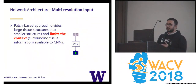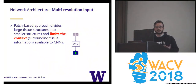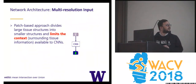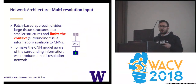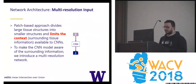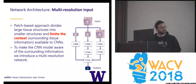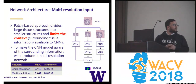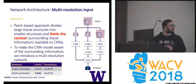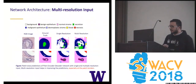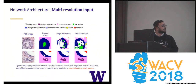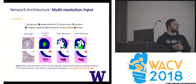Our third contribution is multi-resolution input. As mentioned earlier, patch-based approaches divide larger tissue structures into smaller structures and limit the context available to CNNs. To make the CNN aware of surrounding information, we introduce a multi-resolution network as shown here. This helps in improving the mistakes made at the borders of patches and improves the accuracy of our network by about 2%. This slide also visualises the segmentation results with single resolution versus multi-resolution — with multi-resolution, we are able to make better predictions, especially at the border of the patch.